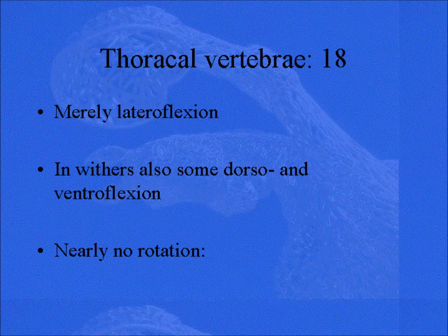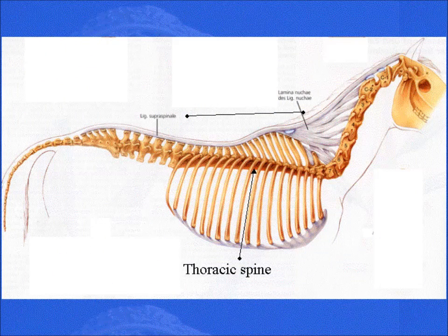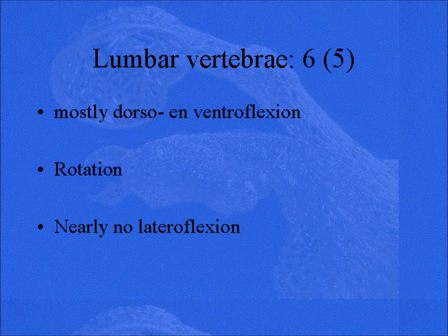The ribcage has 18 vertebrae. They have much more option to move sideways. They can move a bit up and down, but not a lot, and there is nearly no rotation. You can imagine that — the ribcage is really like a cage around the lungs and the heart, and it would not be a good thing if you could wring that out. Here you have the thoracic spine. You can see the ribs are attached. It's really where we sit, more or less in the middle, so it's a very important part with a lot of lateral flexion. This picture of the real skeleton shows that — the inside ribs can come closer, the outside farther away, and then they flex.